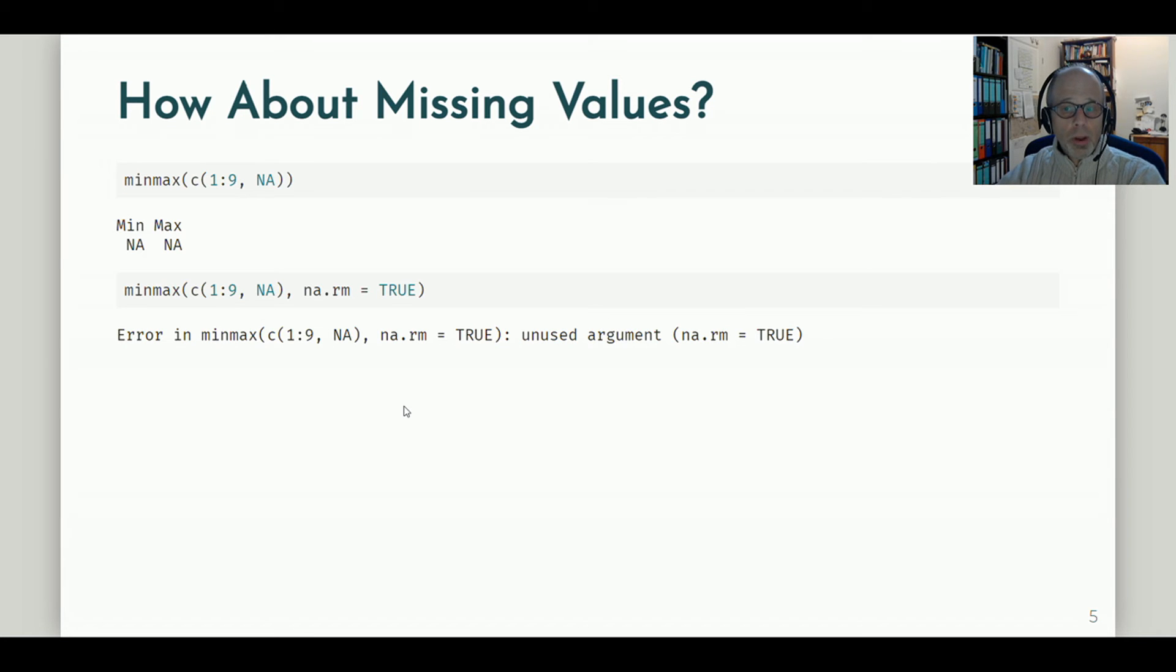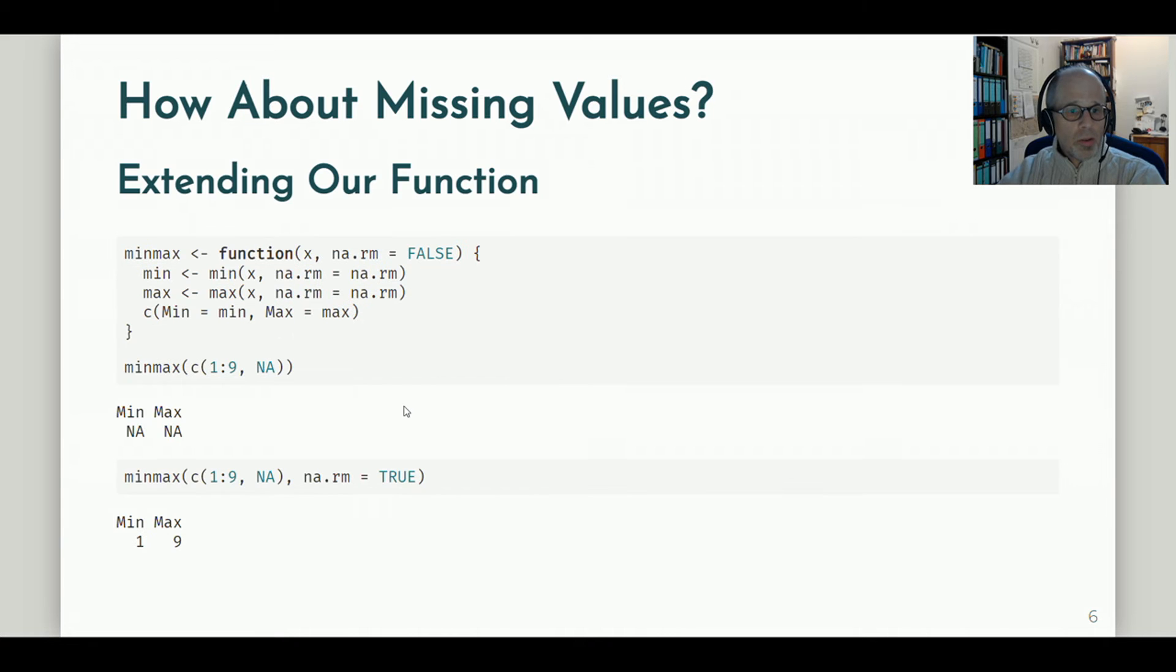So in order to give the user more flexibility in our function, we need to extend it. The first idea may be to explicitly write out this na.rm parameter. I specify that as a second argument to my function. And I have to also pass this argument to the min and max function so that these two functions get the information that the end user passes to the minmax function. So I can try that out.